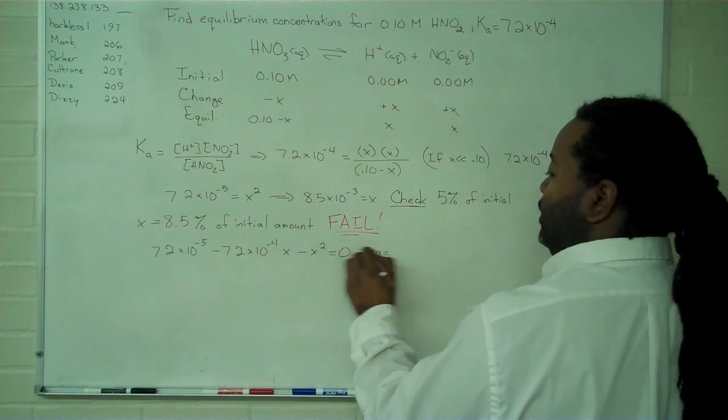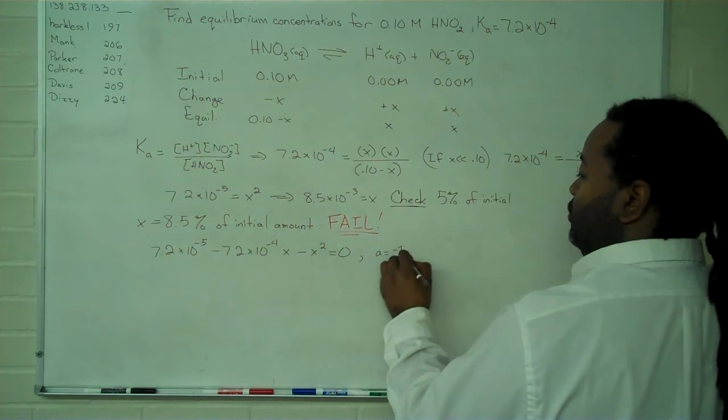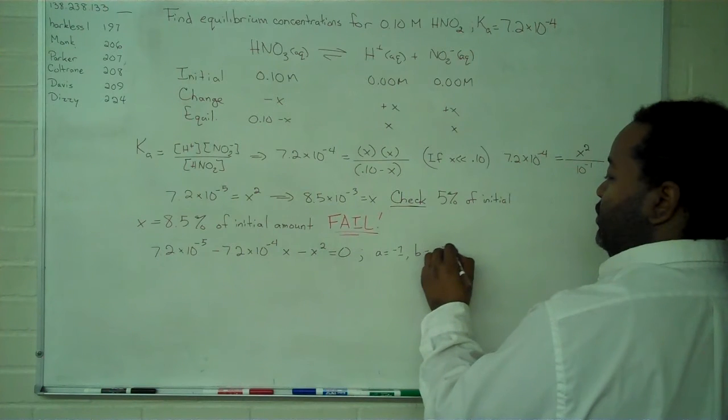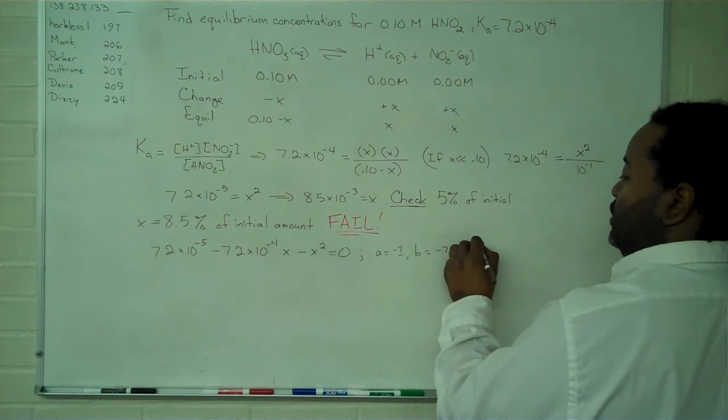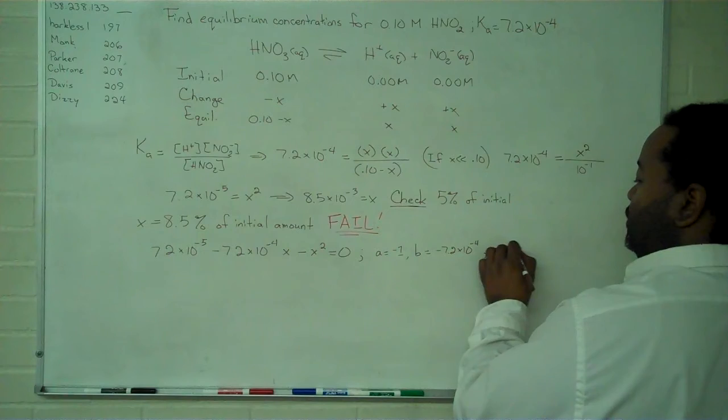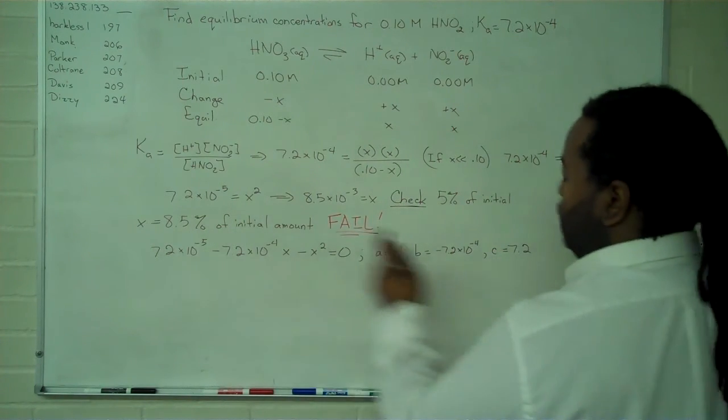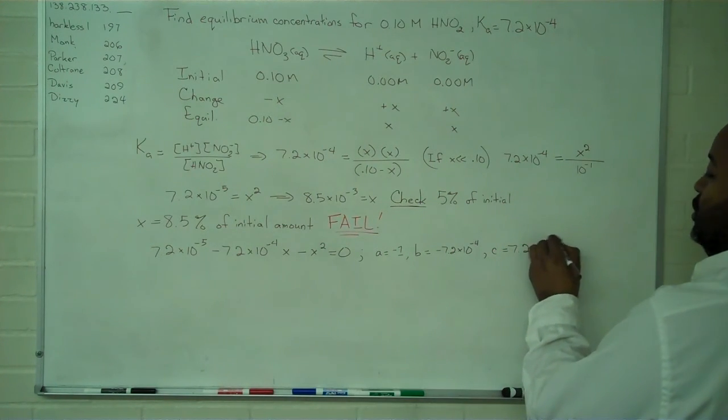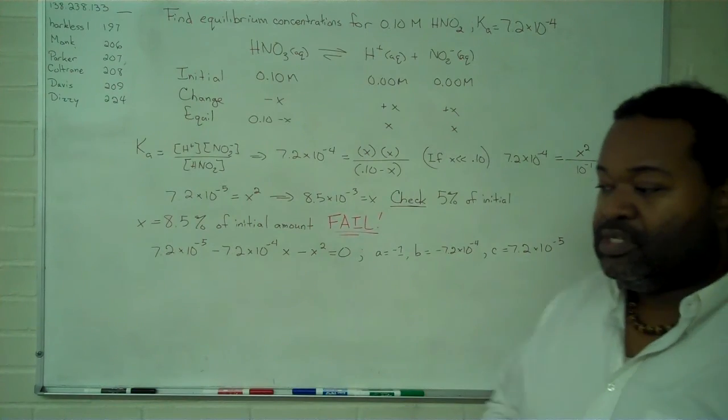This means that a equals negative 1, b equals negative 7.2 times 10 to the minus 4, and c equals 7.2 times 10 to the minus 5.